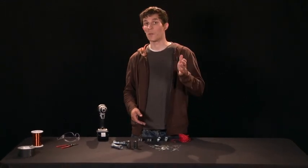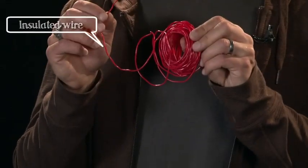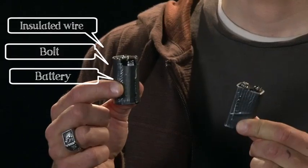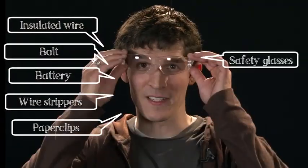We're going to build our own electromagnet today using instructions that are both in the back of the book and at alieninmypocket.com. For this project, you will need some wire that has insulation around the outside, a bolt, a battery, some wire strippers, paper clips, and safety glasses.